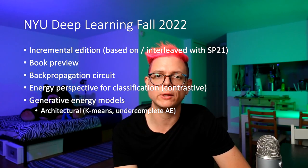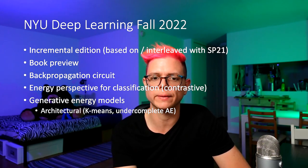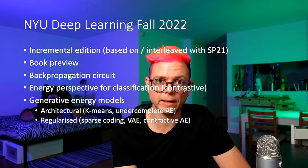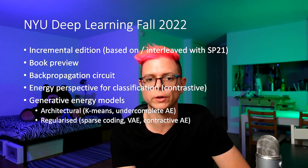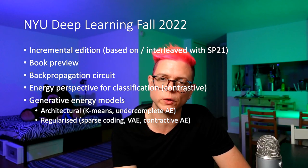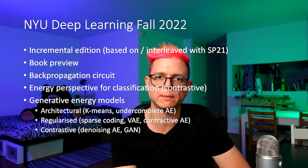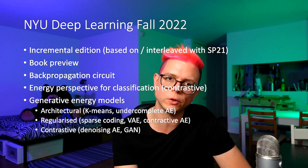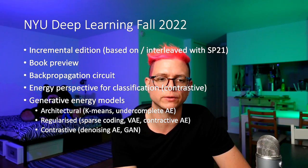We will be talking about the architectural techniques — for example, k-means and undercomplete autoencoders, the regularized one, so sparse coding, variational autoencoders, and contractive autoencoders. And then finally we can also talk about some contrastive techniques: the noisy autoencoder and generative adversarial networks.